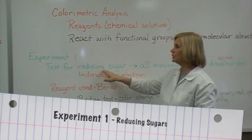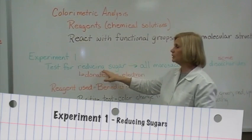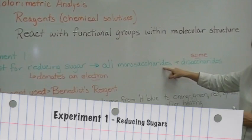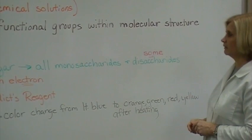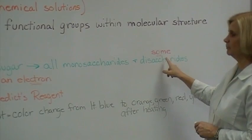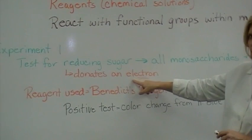Experiment one we're going to test for reducing sugars and reducing sugars is a synonym for all your monosaccharides such as glucose, fructose, galactose, and some disaccharides. Disaccharides is two monosaccharides bound together. Not all disaccharides are reducing sugars just some. What is a reducing sugar? A reducing sugar is simply that functional group that's going to donate an electron.